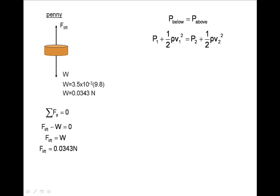The velocity below the penny is 0, so we can eliminate it from the equation. After eliminating V1 and subtracting P2 from both sides, we can now isolate V2. Let's rewrite P1 minus P2 as delta P.